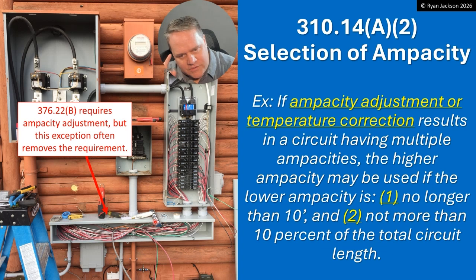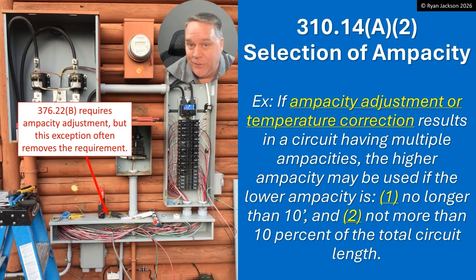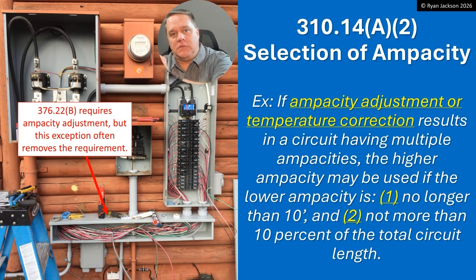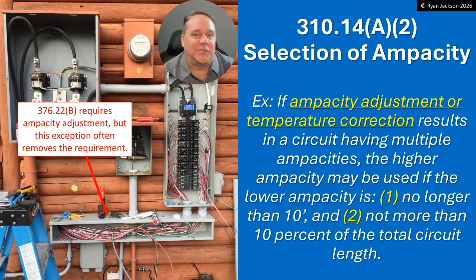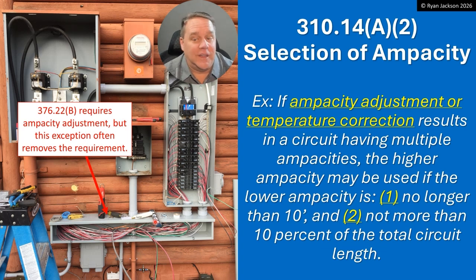Here's something I never thought about. I always viewed this exception as applying only to ampacity adjustment or temperature correction, but the old text didn't say that. So technically, could you run a hundred-foot piece of 500 kcmil and just pigtail five feet of number 12 onto the end and put it on a 400-amp breaker? I think that's what it said. I never caught it — I always read it as saying what it now says, which is: 'if ampacity adjustment or temperature correction results in a circuit having multiple ampacities.' That language was added to fix a real loophole. I'd like to know how long it's been wrong — it's been wrong my whole career.